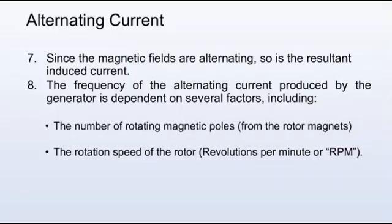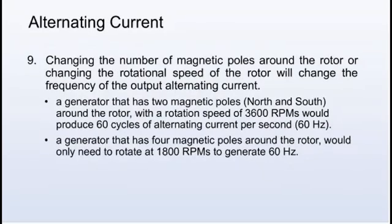Since the magnetic fields are alternating, so is the resultant induced current. The frequency of the alternating current produced by the generator is dependent on several factors, including the number of rotating magnetic poles from the rotor magnets and the rotation speed of the rotor in revolutions per minute, or RPMs. Changing the number of magnetic poles around the rotor or changing the rotational speed of the rotor will change the frequency of the output alternating current.